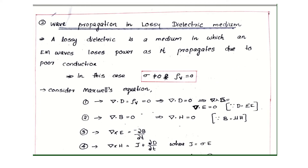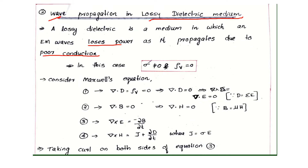Dear student, now to add up the topic: wave propagation in lossy dielectric medium. A lossy dielectric medium is a medium in which an electromagnetic wave loses its power as it propagates, due to poor conduction. When the lossy dielectric medium wave equation is derived, we consider the case where sigma is not equal to 0 and rho_v is equal to 0, where sigma is the conductivity and rho_v is the charge density.